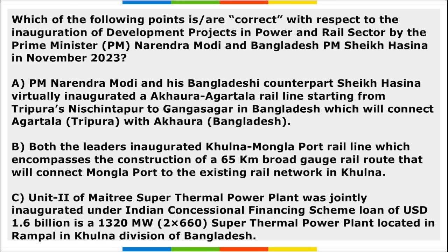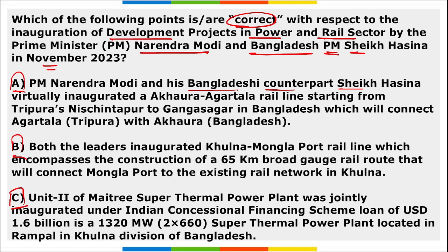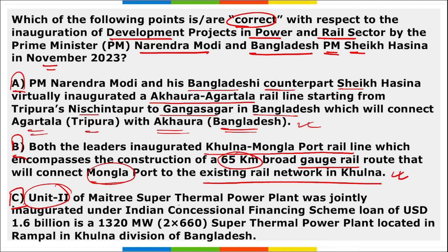PM Modi and Bangladesh PM Sheikh Hasina virtually inaugurated the Akhaura-Agartala rail line starting from Tripura's Nishchintapur and connecting Agartala in Tripura with Akhaura in Bangladesh. They also inaugurated the Khulna-Mongla Port rail line, a 65 km broad gauge route connecting Mongla port to the existing rail network in Khulna. The second unit of Maitri Super Thermal Power Plant was jointly inaugurated — a 1320 MW plant in Rampal, Khulna division, Bangladesh, under India's concessional financing scheme loan of $1.6 billion.